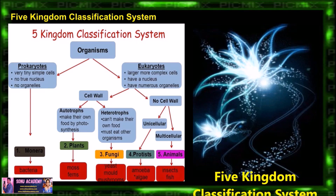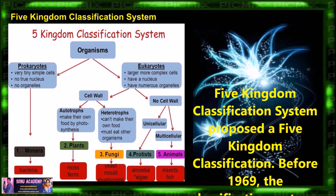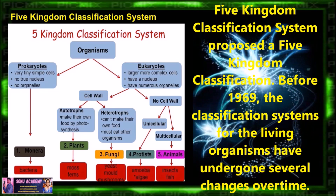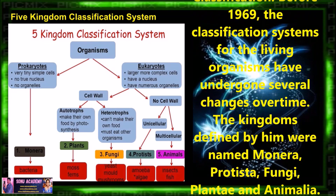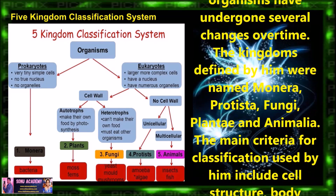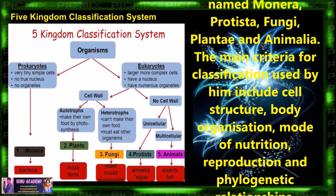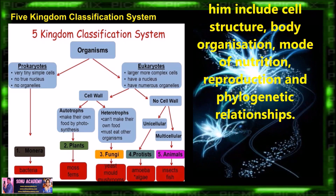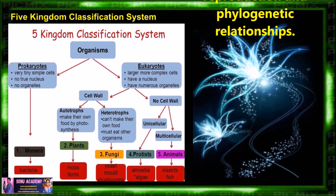Later on, the five kingdom classification system was developed, proposed by Whittaker in 1969. The classification of living organisms underwent several changes over time. The kingdoms defined by him were named Monera, Protista, Fungi, Plantae and Animalia. The main criteria for classification used by Whittaker included cell structure, body organization, mode of nutrition, reproduction and phylogenetic relationship.